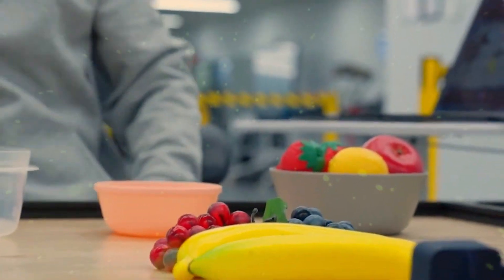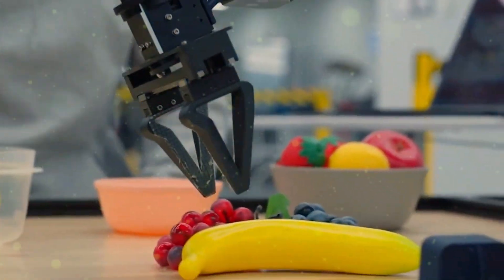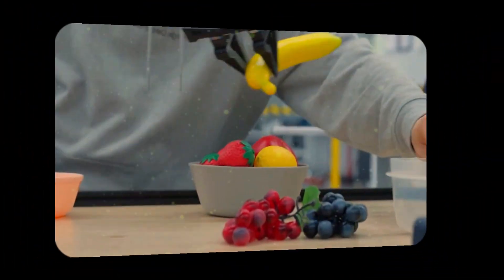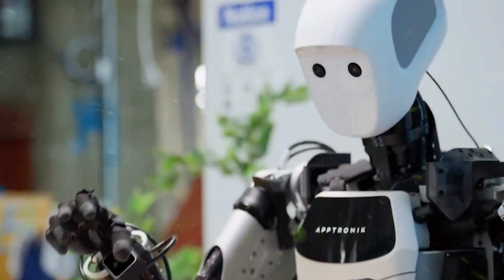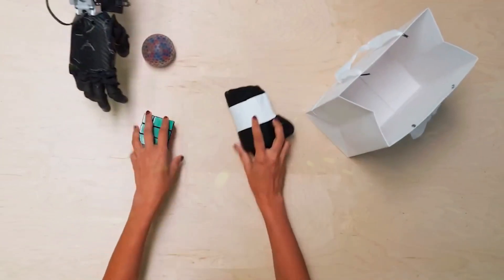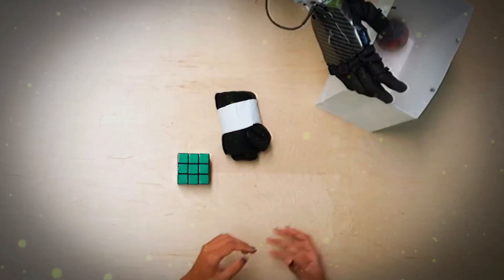For years, robots were like goldfish with a to-do list. One instruction, one action. Put the banana in the bowl, over and over, useful but dumb. Now, robots can think while they act, they can chain tasks together, improvise when things change, and even make little micro-decisions that no one trained them for.